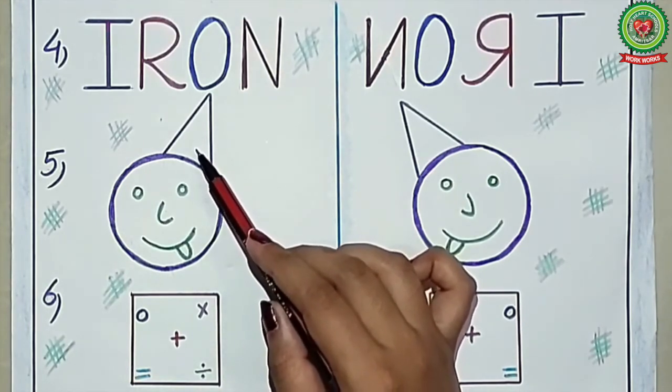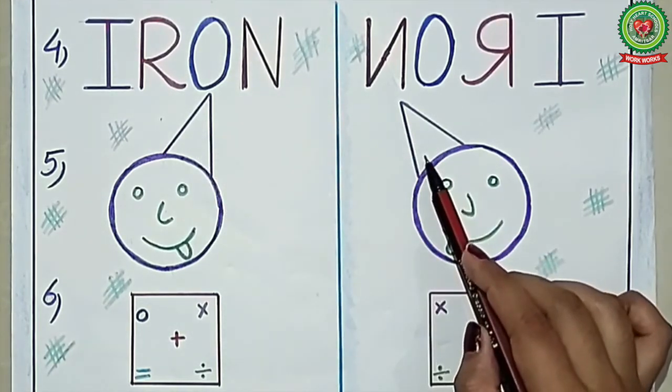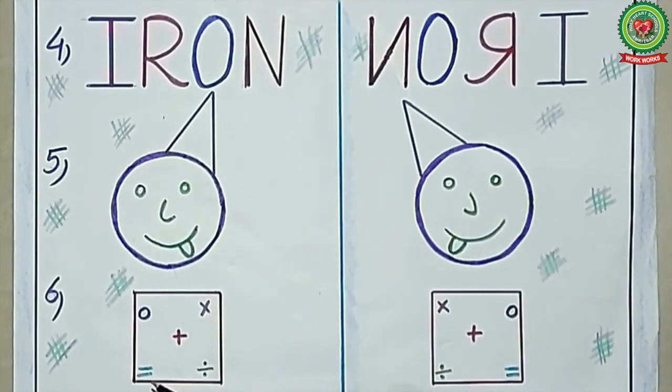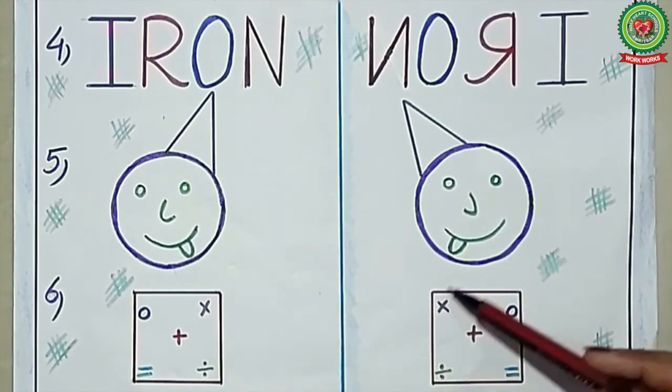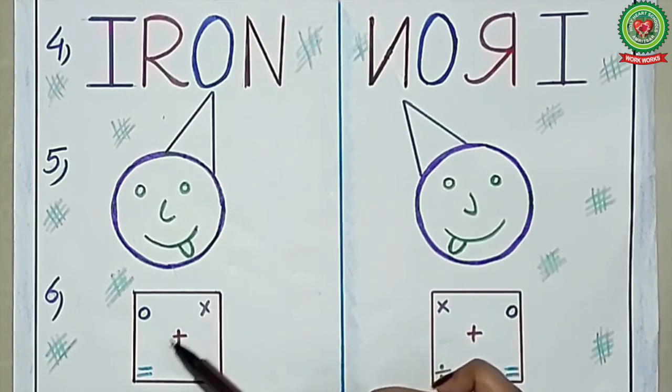Next example, there is a box containing zero, multiplication, plus, equals, and divide. The image of the box is the same, but the signs are changed.